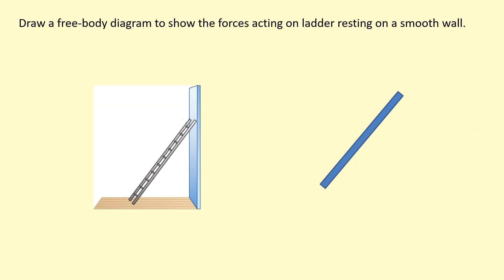So far we've been treating all objects as point objects, but sometimes — especially when things rotate or spin — where the force is applied matters. In this case we have a ladder resting against a wall. We assume it's a uniform ladder, so its weight acts through the centre of mass, mg. The smooth wall pushes on the ladder at 90 degrees — because it's smooth, there's no friction from the wall. The floor pushes upwards, and if there is friction between the floor and the ladder, it acts along the floor. All these forces must balance for the ladder to remain stationary, and the moments — the turning effects — must also balance.